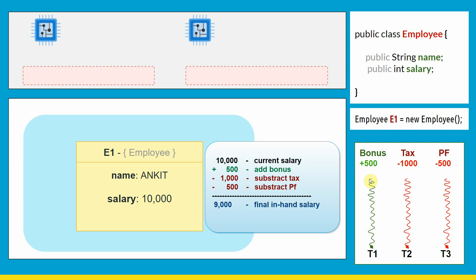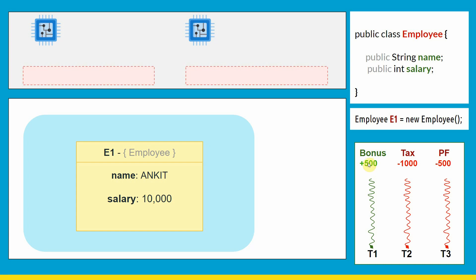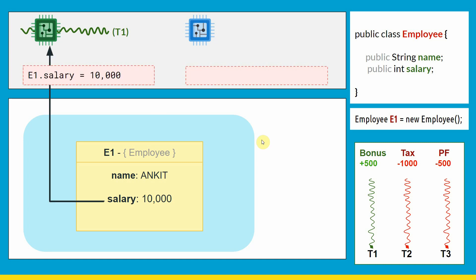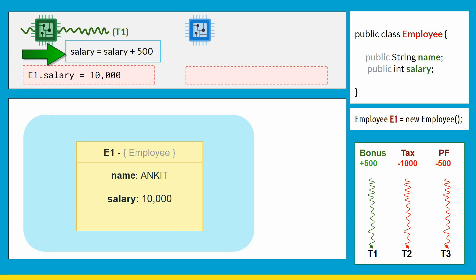Each operation is performed by a different thread, because volatile and synchronized keywords only come into picture in a multi-threaded environment. Let's say thread one performs the bonus operation and is picked up by core one. Core one will go to the RAM, read the value, put it into its cache, then perform the operation.